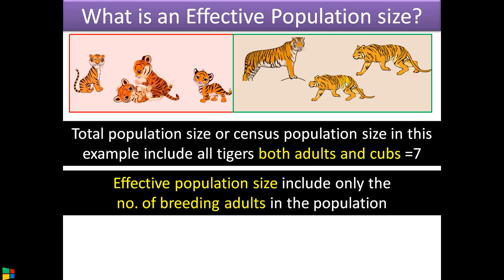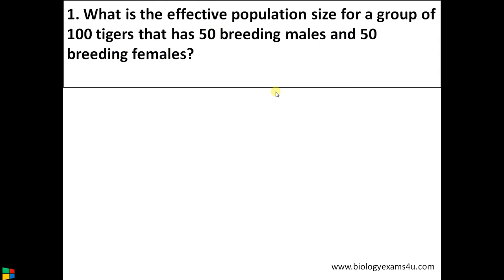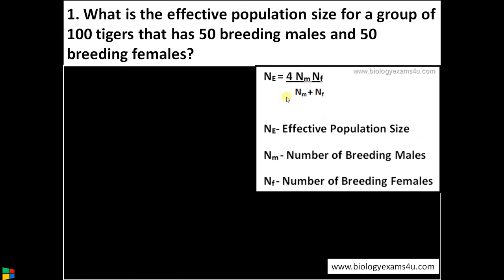Now let us work out some problems to find out effective population size. What is the effective population size for a group of 100 tigers that has 50 breeding males and 50 breeding females? The equation for finding out effective population size is: Ne = 4 × Nm × Nf / (Nm + Nf), where Ne is the effective population size, Nm is the number of breeding males, and Nf is the number of breeding females.